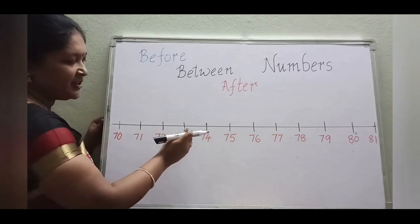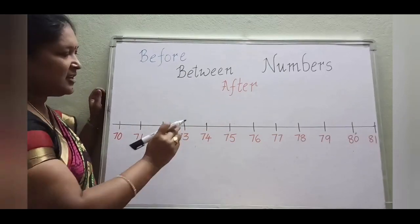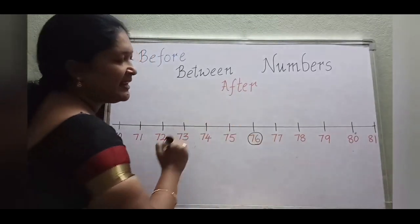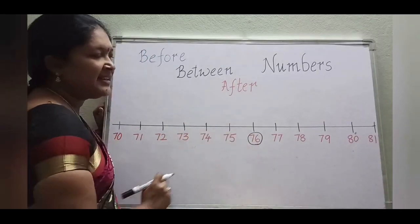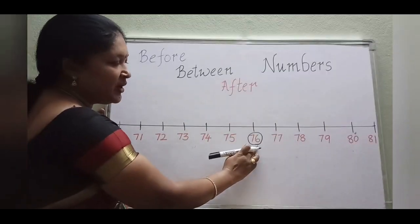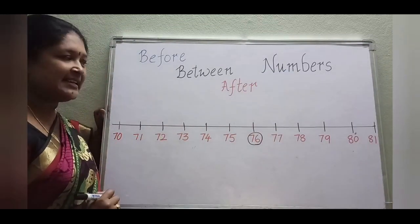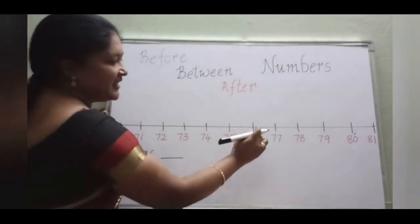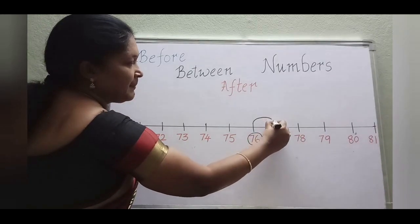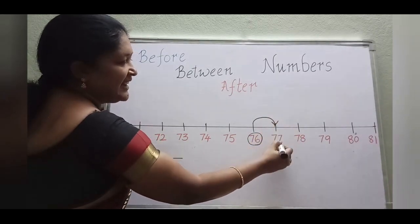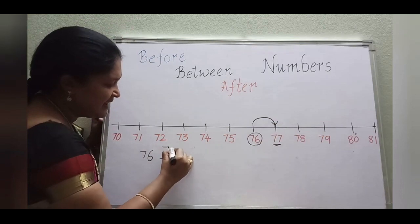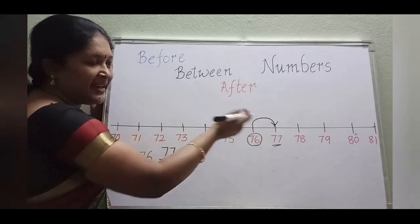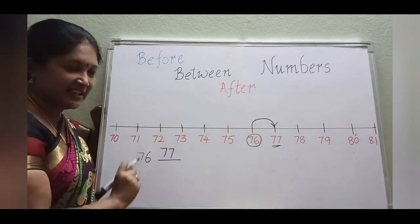70, 71, 72, 73, and so on. So here, take any one number children. I want to take 76. What is the after number of 76? 76 after, which number will come? See children, 76 after, 77 is there. So when we move one number forward to the next number, that is called the after number.